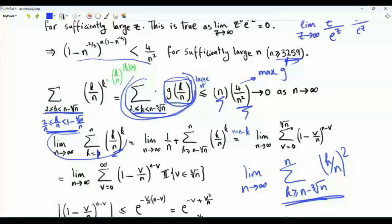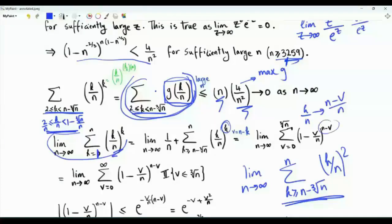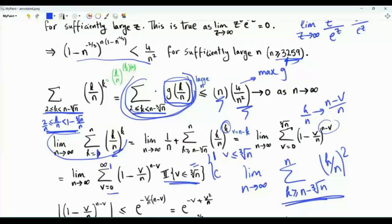We perform the change of index v = n - k. Then the sum runs from v = 0 to the cube root of n, and k/n becomes (n-v)/n = 1 - v/n, with exponent k = n - v. We can rewrite the sum as a sum from v = 0 to infinity with an indicator function equal to 1 when v ≤ n^(1/3) and 0 otherwise.